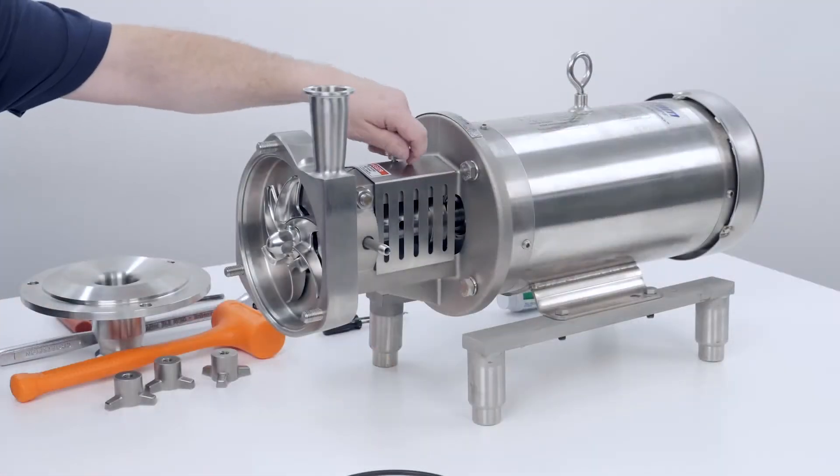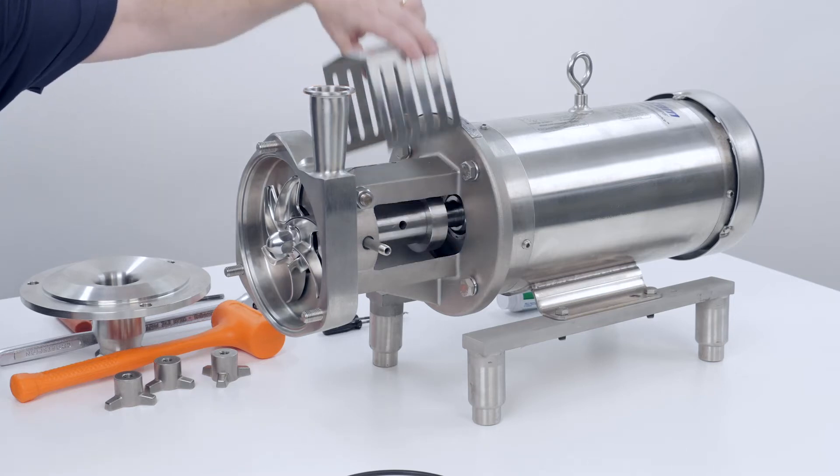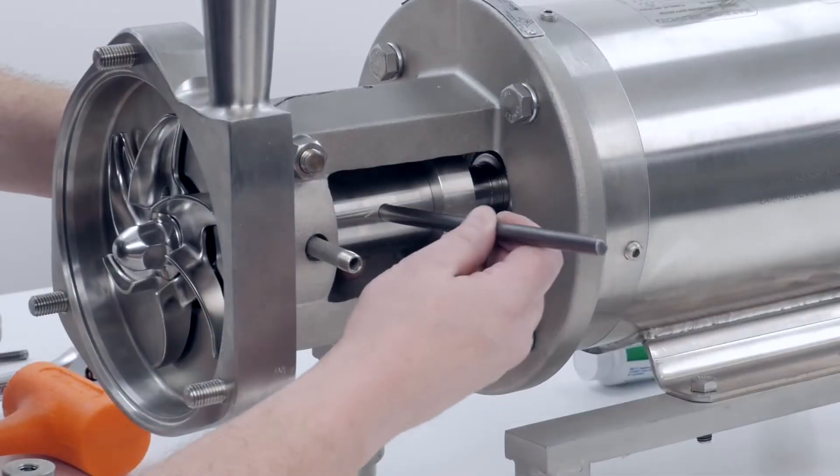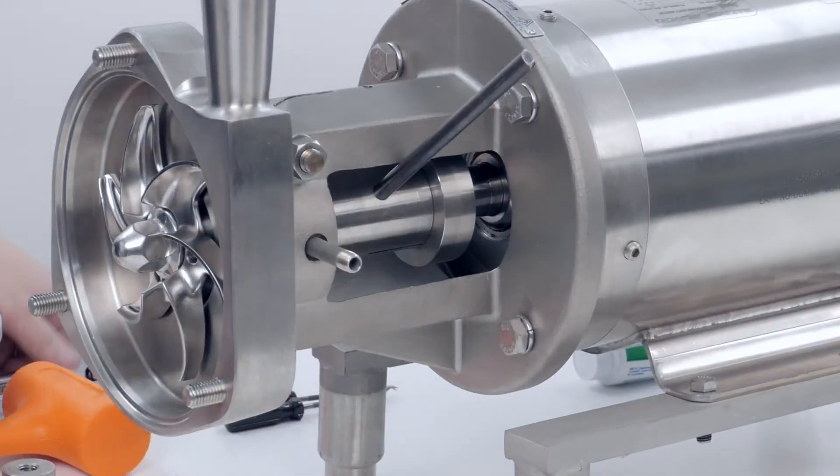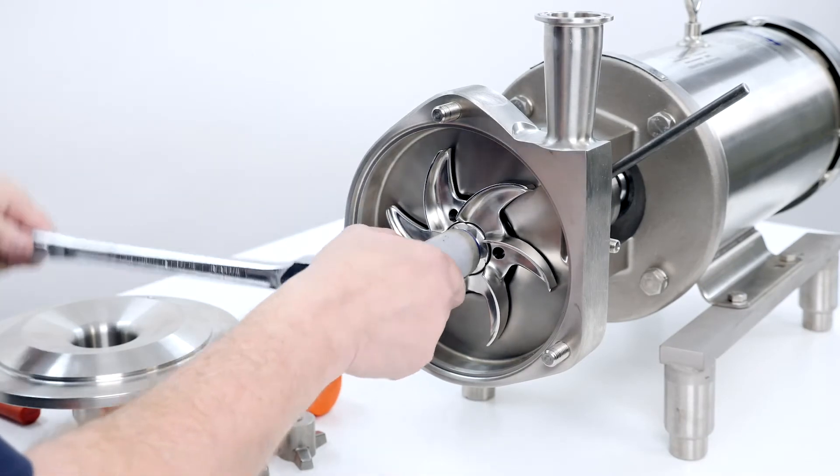Remove the flange guard. Place a 3 1/8 inch rod in the shaft hole to stop shaft rotation. Use a 24 mm socket with ratchet to remove the impeller nut.